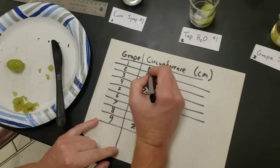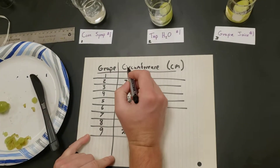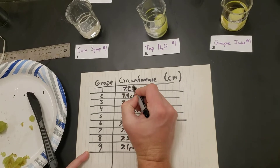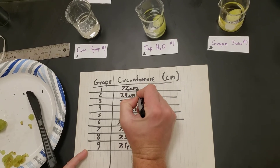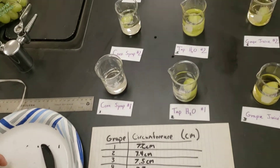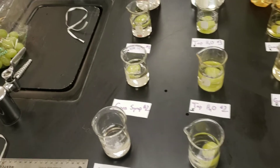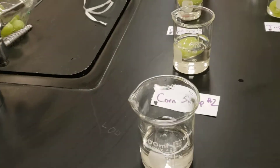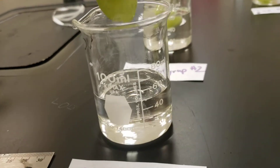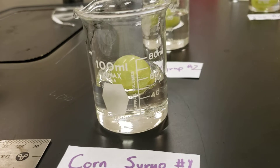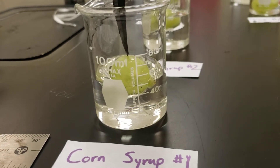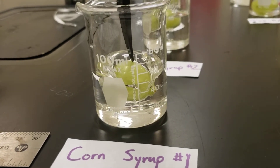I'm going to write 7.2 centimeters down into my data table — this is Grape One, left blank to show you how we did it. Now we're gently going to put this into the liquid. This one's the corn syrup, so it's going to be a bit difficult, but we're going to try to submerge this as much as we possibly can.